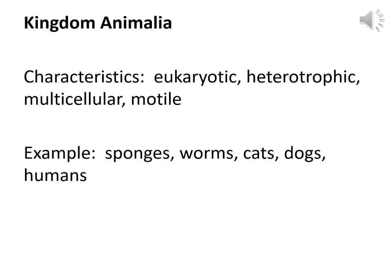This week, we are working exclusively with Kingdom Animalia. The characteristics are eukaryotic, which means they have a nucleus; heterotrophic, which means they eat other critters; they're multicellular, meaning many cells; and they tend to be motile, which means they move. There are all sorts of examples — everything on this handout is an example, from sponges all the way to humans.